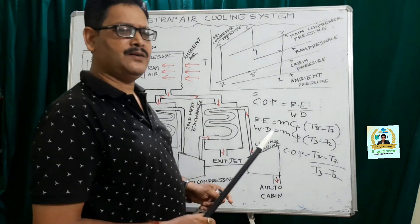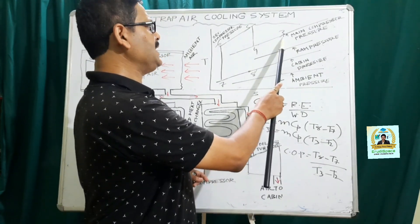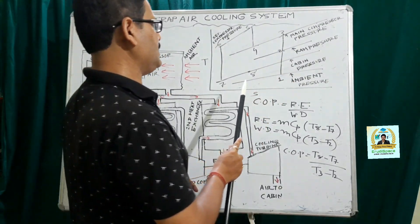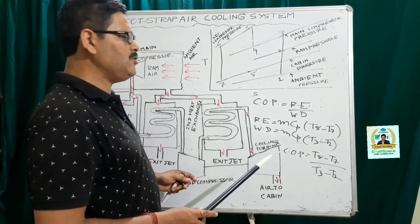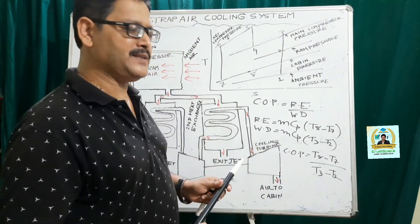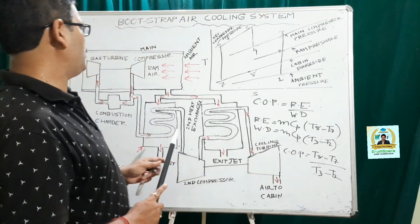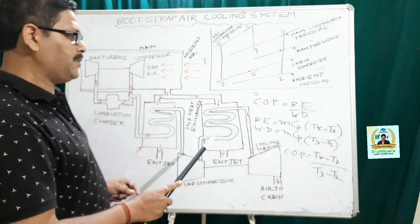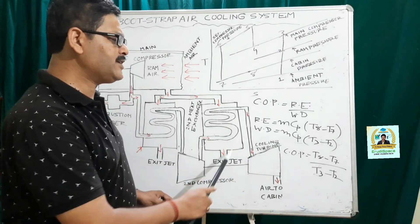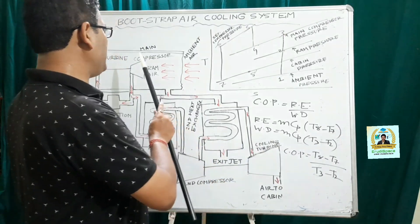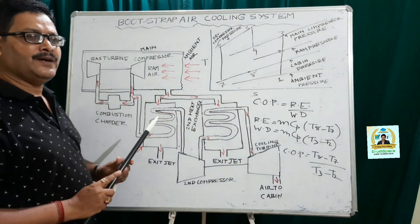If you consider the effect of irreversibility, you have to make changes, because then 2 will become 2-dash, 3 will become 3-dash, and similarly 5 will become 5-dash and 7 will become 7-dash, so accordingly you have to make changes in the coefficient of performance. There are 2 compressors: one is the main compressor and the second is the second compressor. But we do not take into account the work in the second compressor because this is derived from the cooling turbine itself. So the work of the main compressor is to be considered while calculating the coefficient of performance of the bootstrap air cooling system.